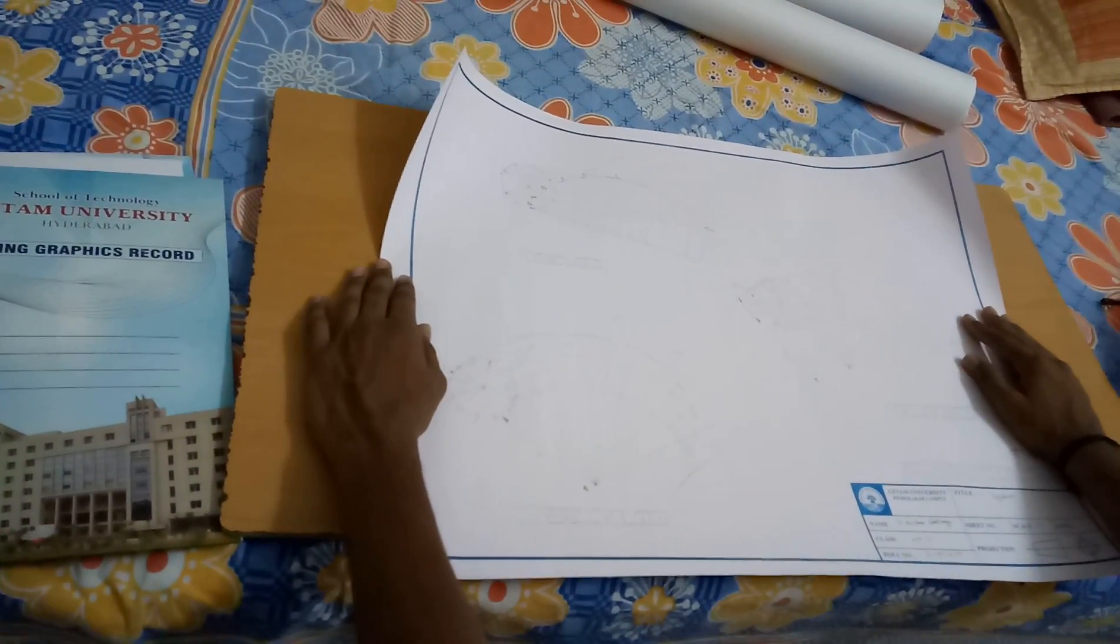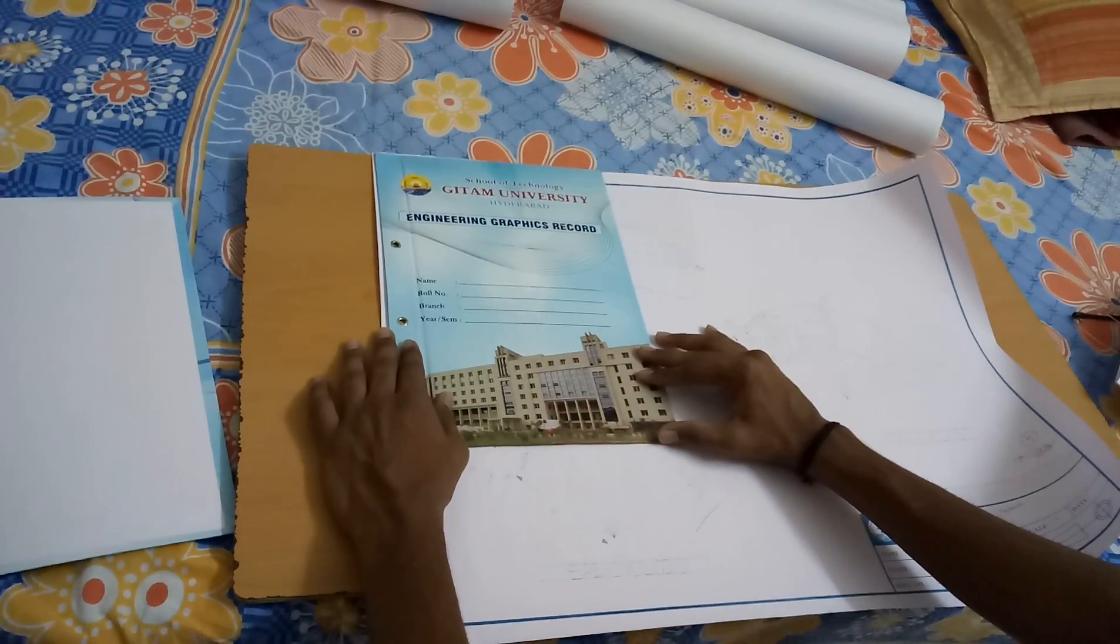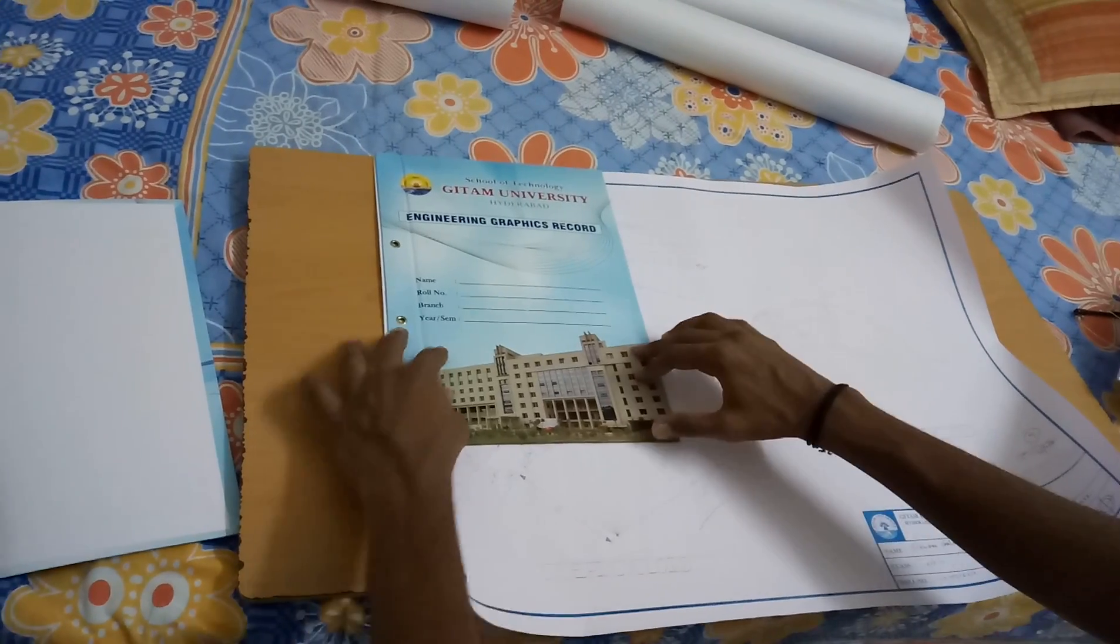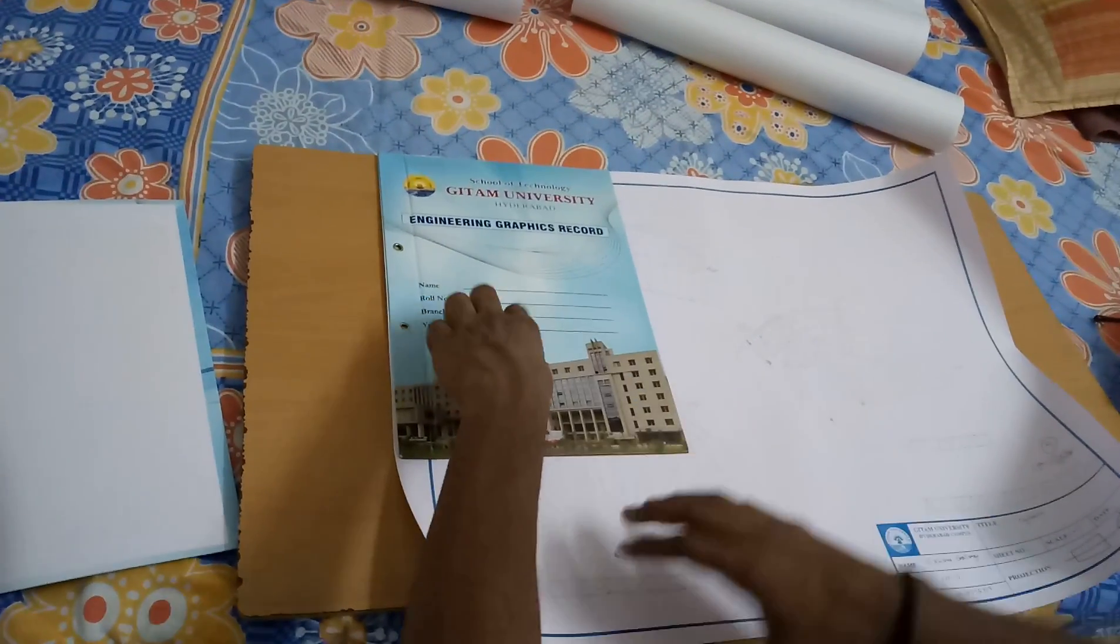This is the drawing sheet. Now take a half of the drawing record and then fold the drawing chart.